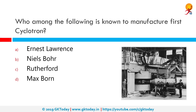Who among the following is known to have manufactured the first cyclotron? That would be Ernest Lawrence. A cyclotron is a type of particle accelerator invented by Ernest O. Lawrence in 1929–30 at the University of California, Berkeley, and patented in 1932. A cyclotron accelerates charged particles outwards from the center along a spiral path.